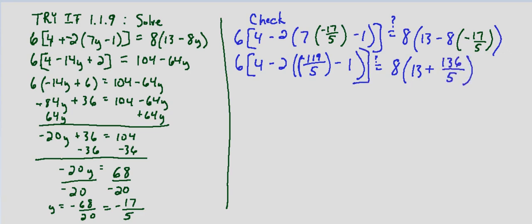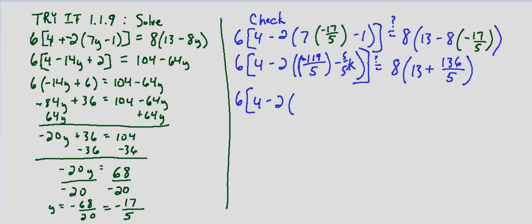And that ends up being 136 fifths. So this ends up being 6 times 4 minus 2 times negative 119 fifths minus 1. So another way to write 1 is just 5 fifths. I'm putting this over a common denominator. So negative 119 minus 5 is negative 124 fifths. And again we want to know does that equal, and then 8 times 13 if we multiply that by 5, 10 times 5 is 50, 3 times 5 is 15. So that ends up being 65. So this is 65 plus 136 over 5.